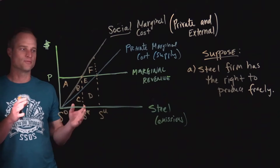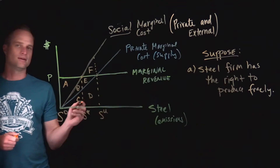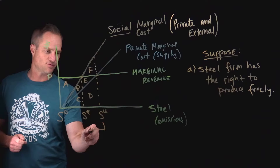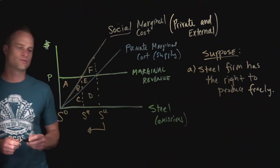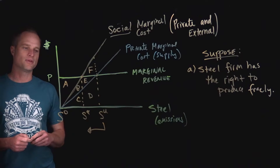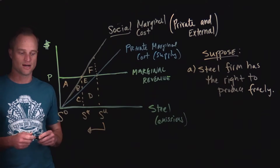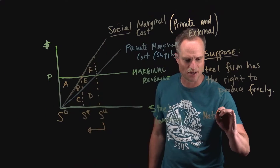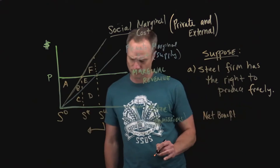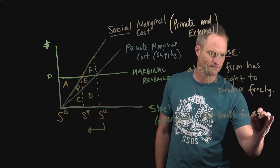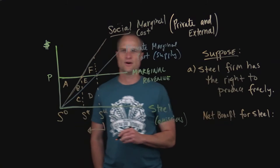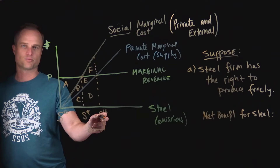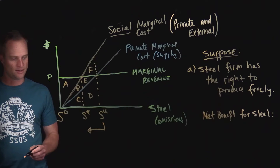The Coase theorem tells us that these two firms would negotiate to the efficient solution. Starting with Case A — the steel firm has the right to pollute — we would move from S^U to S* through bargaining. Let's look at the net benefits (benefits minus costs) to each entity. The net benefit to the steel firm from a move from S^U to S* is going to be negative — they would of course prefer to stay at S^U.